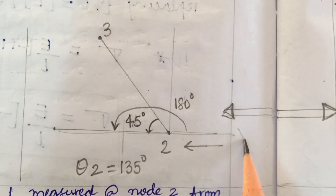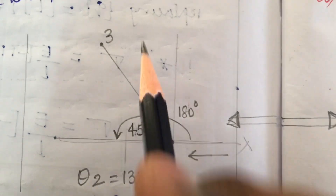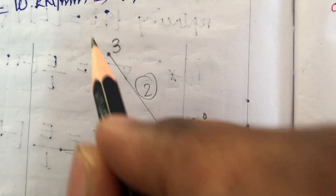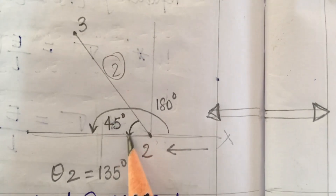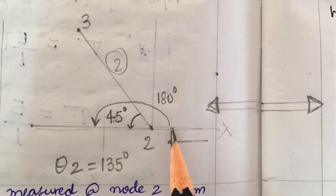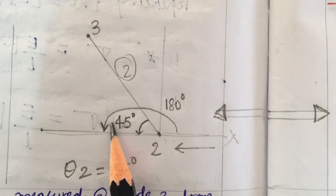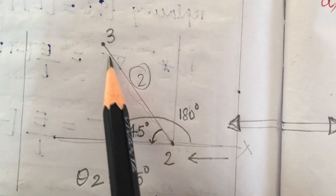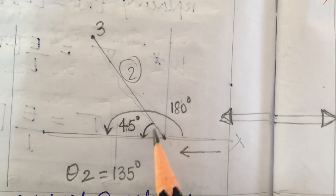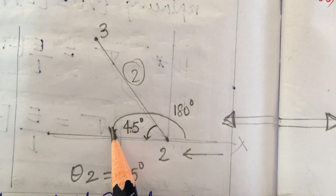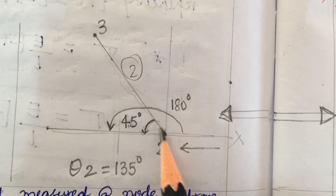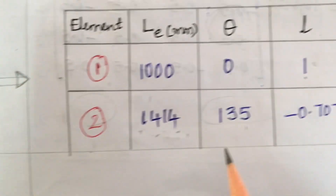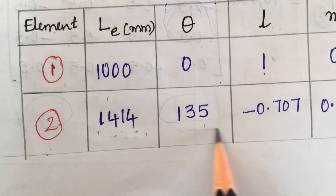We are talking about element 2, which goes from node 2 to node 3. This is given as 45 degrees, but the plus x axis needs to be added to this. So the actual angle is 180 minus 45, which gives us 135 degrees.